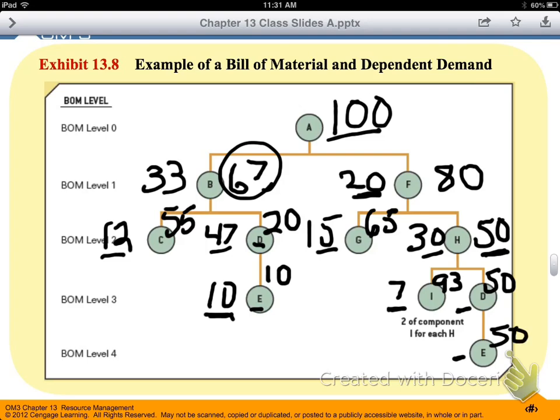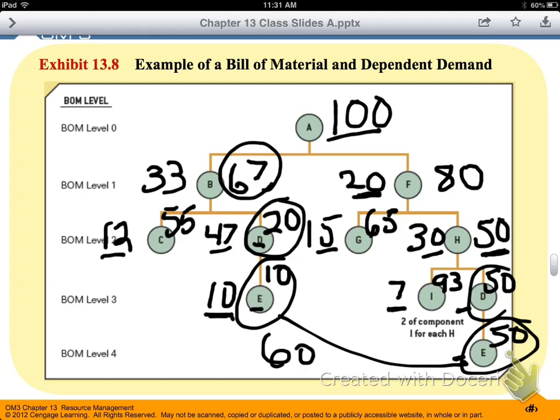So in total, our E items added together, we need 60 of those, and our D items, we need 70 of those.